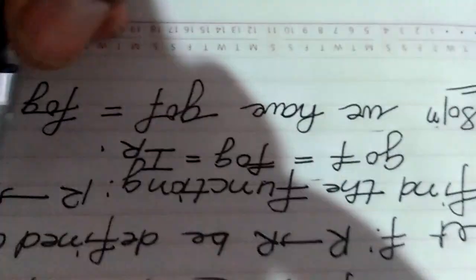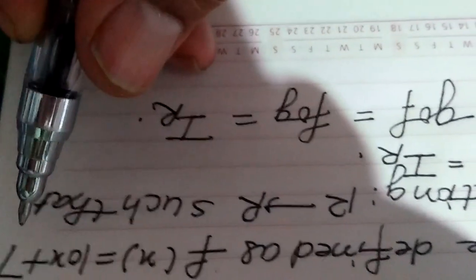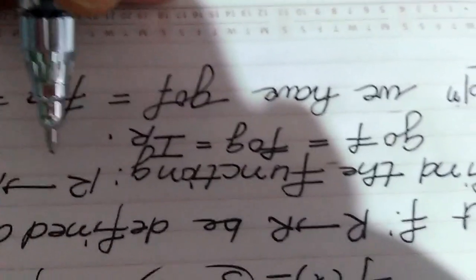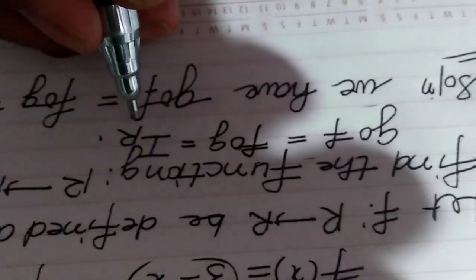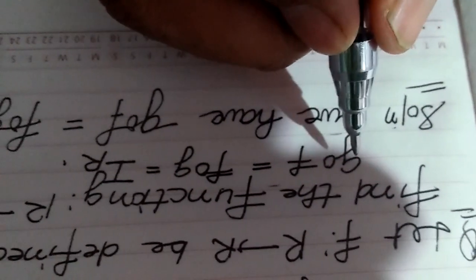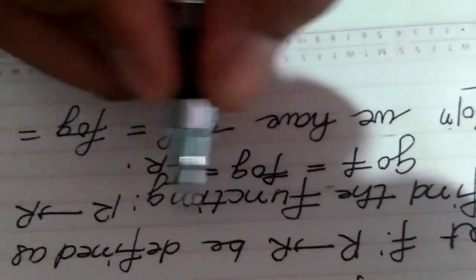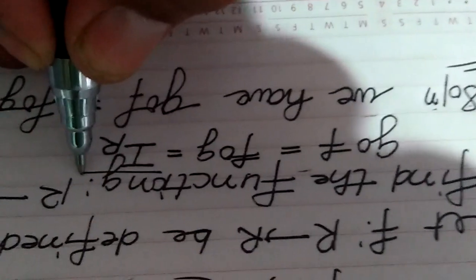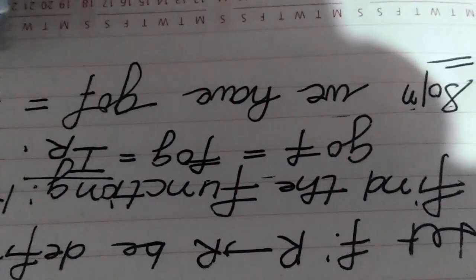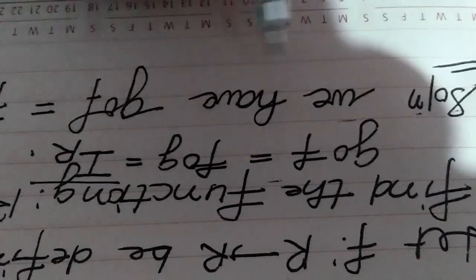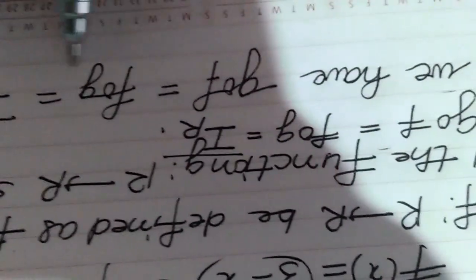Students, we have a question. Let f: ℝ → ℝ be defined as f(x) = 10x + 7. Find the function g: ℝ → ℝ such that g∘f = f∘g = Iᵣ, where Iᵣ is the identity function on ℝ. So f is defined as 10x + 7, and we have to find g such that g∘f and f∘g are both equal to Iᵣ — meaning g and f are inverses of each other.